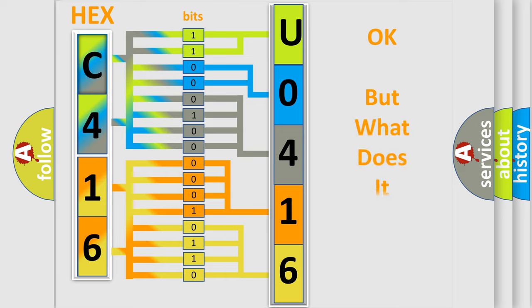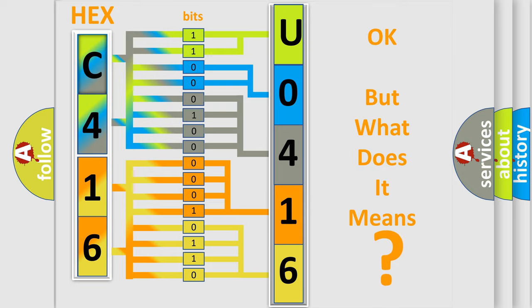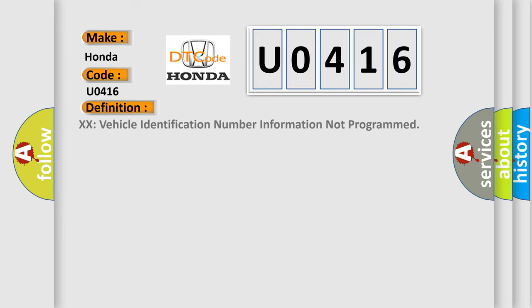We now know in what way the diagnostic tool translates the received information into a more comprehensible format. The number itself does not make sense to us if we cannot assign information about what it actually expresses. So, what does the diagnostic trouble code U0416 interpret specifically for Honda car manufacturers?